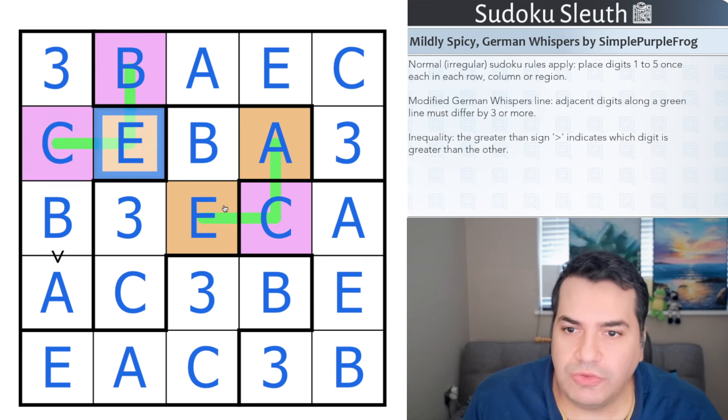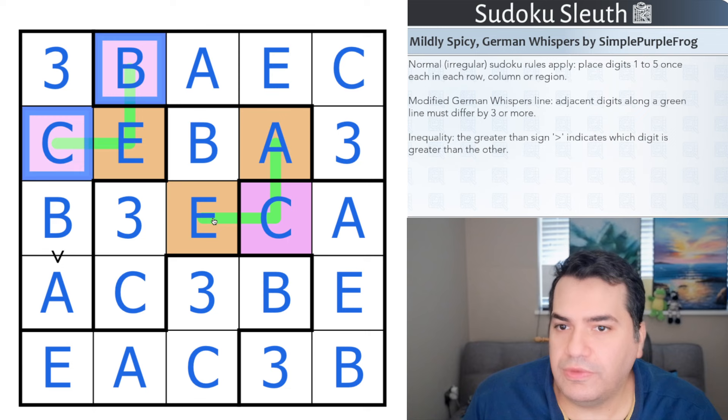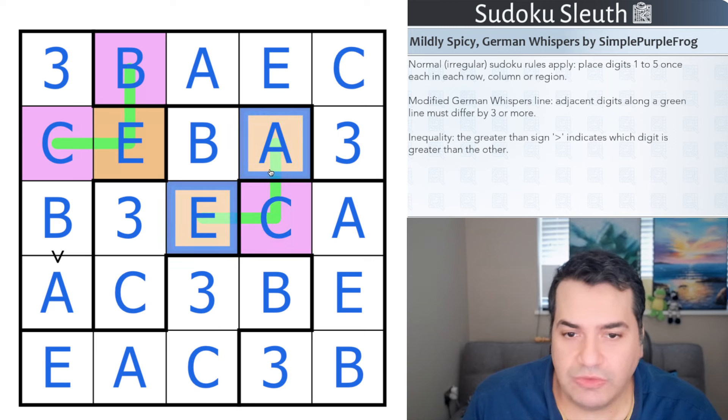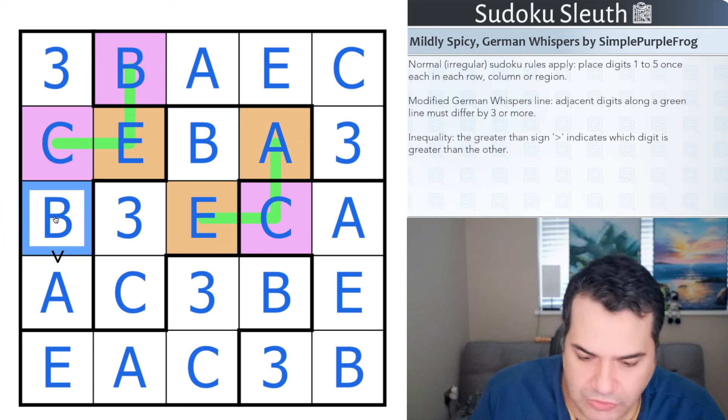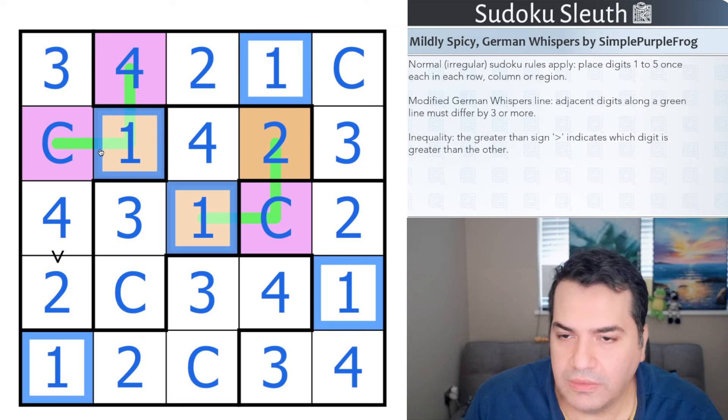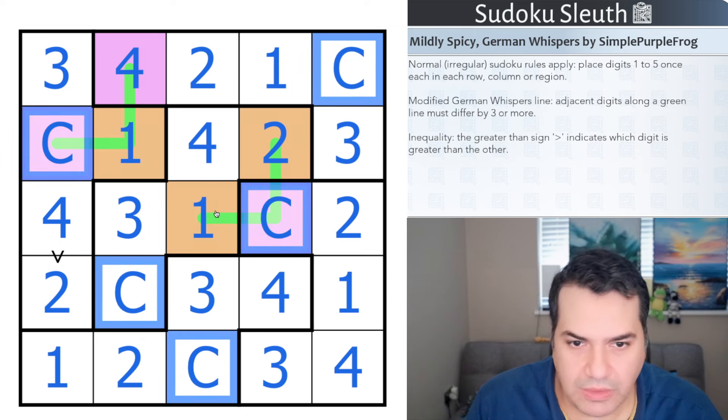The reason I know that is essentially whatever this digit is, it sees two different numbers next to it. So imagine for a second that this is a four—the only digit that is three or more away from it would be one, and both of these would have to be the same letter, and they're not. The same logic applies in here. If this was the four—or let's go with the two—the only digit that would be five or more away would be five, and they would have to be both the letter, and they're not. So E and C are essentially one and five. B and A are two and four, and B is the bigger digit, so that's four, that's two. That gives us now—this has to be the one to be three or more away. This therefore has to be the five, and that is a solution to today's puzzle.